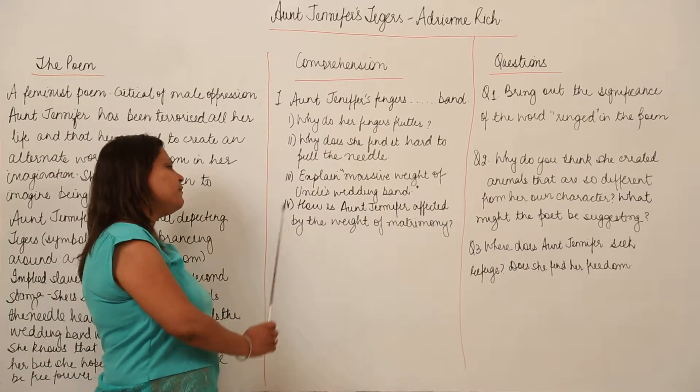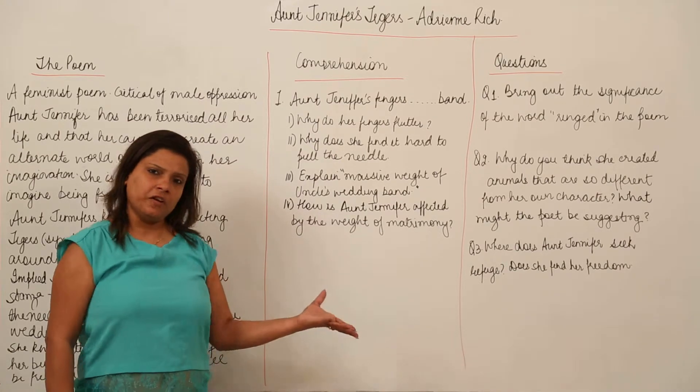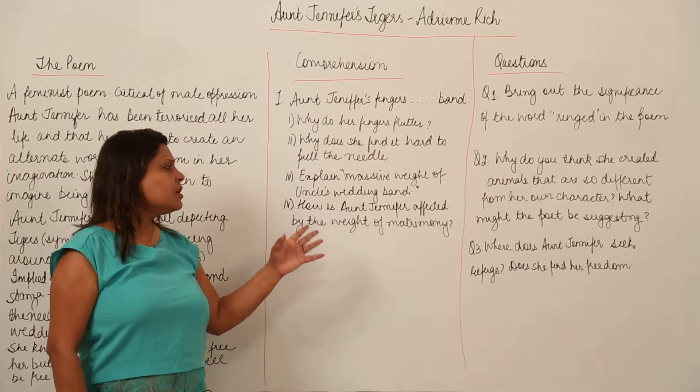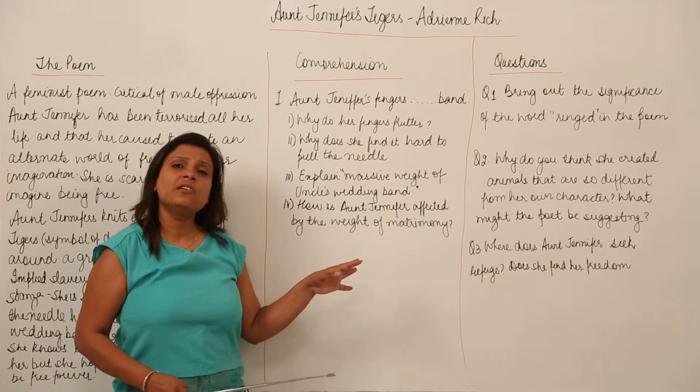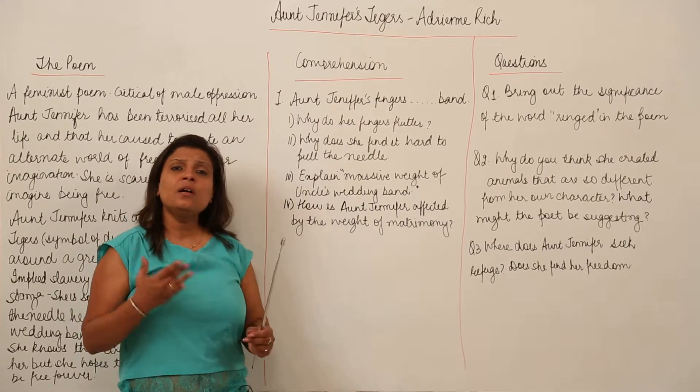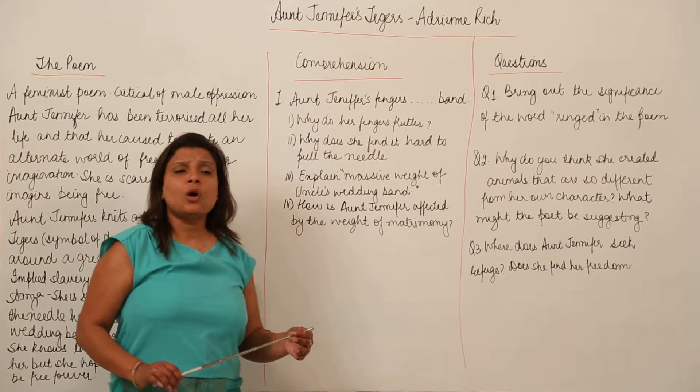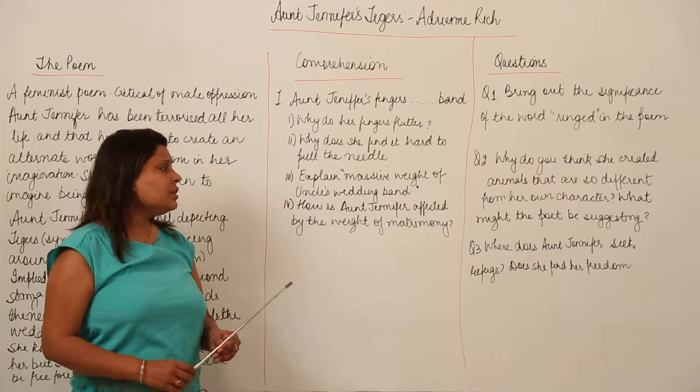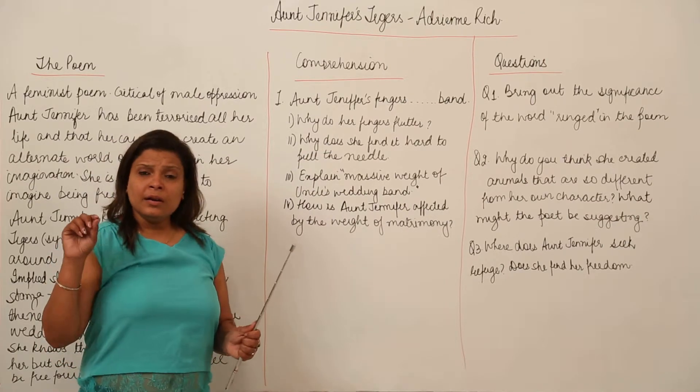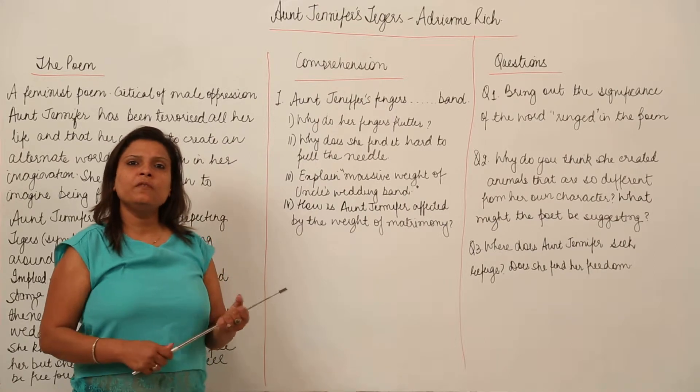How is Aunt Jennifer affected by the weight of matrimony? It is the same answer in framing in a different word, framing in some different words. She has been affected by the weight of matrimony so badly that she feels the ring to be a symbol of weight. She is weighed down by it. She is not free at all. She does not, she cannot even knit a tapestry without being nervous or without feeling oppressed.